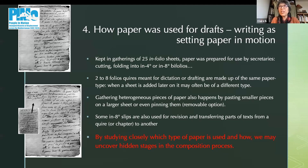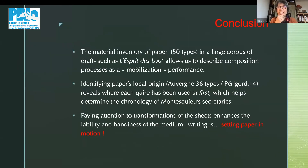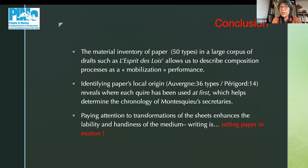The main conclusions are that the material inventory of paper — 50 types in L'esprit des lois — allowed us to describe the composition process as a mobilization of paper: movement, performance. Identifying papers' local origin from Auvergne and Périgord reveals where each quire was first used, which helps determine the chronology of Montesquieu's secretaries. Paying attention to transformations of the sheet also enhances our understanding of the handiness and ability of the medium, defining the writing activity as a setting of paper in motion. Thank you for your attention.